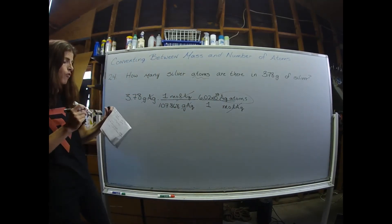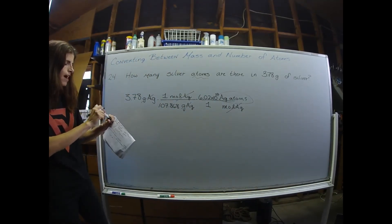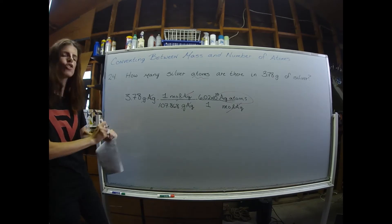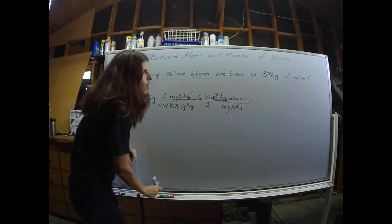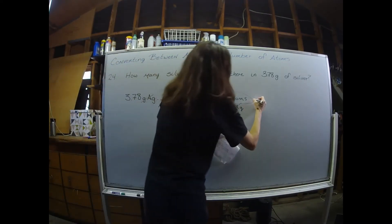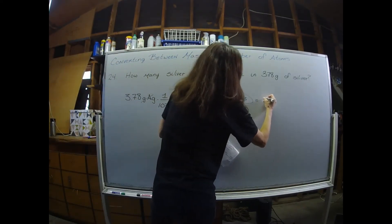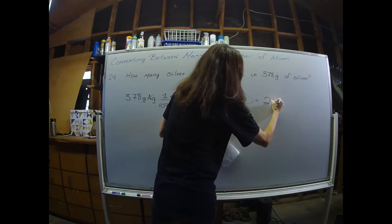Putting the numbers into the calculator, you should get 2.11 times 10 to the 22nd silver atoms.